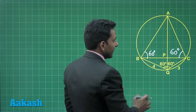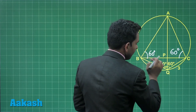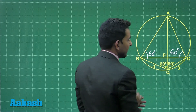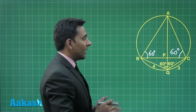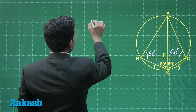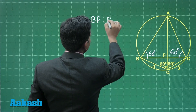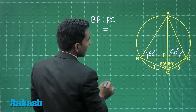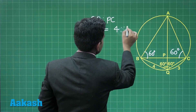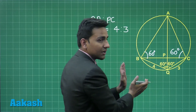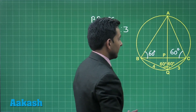Here we can see that PQ is the angle bisector of angle BQC. That means we can apply the concept of the angle bisector theorem, and we can relate the ratio of BP to PC as equal to 4 is to 3, because BQ is given as 4 centimeters and QC is equal to 3 centimeters.